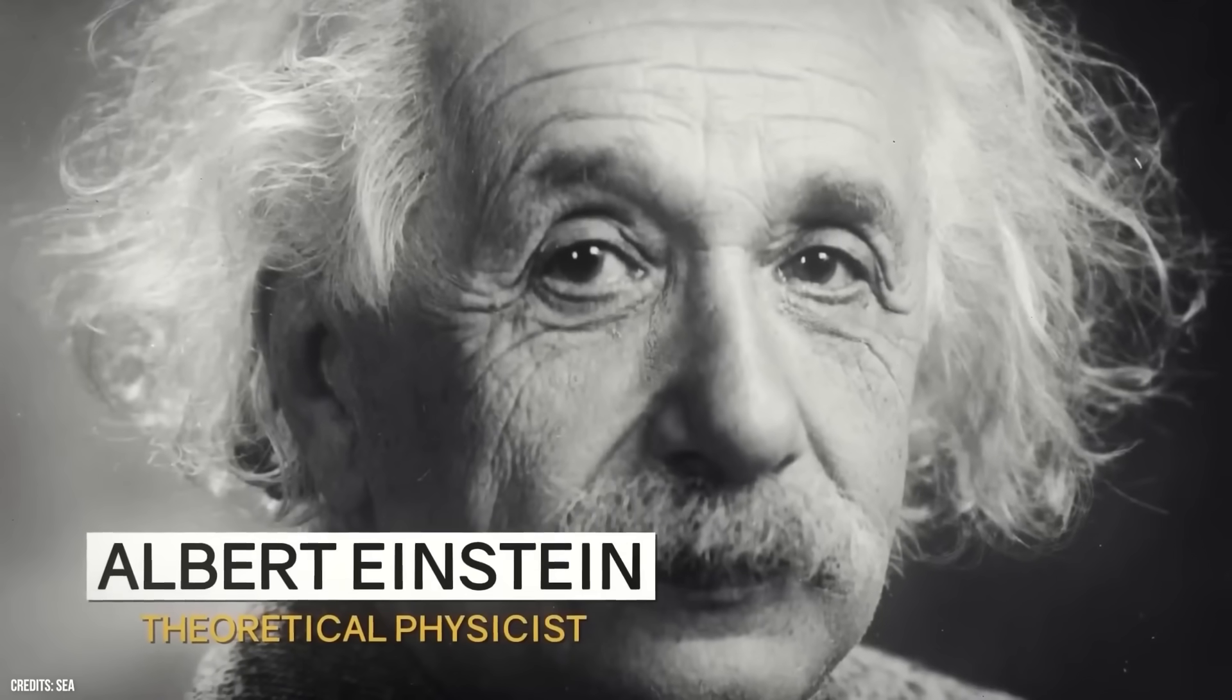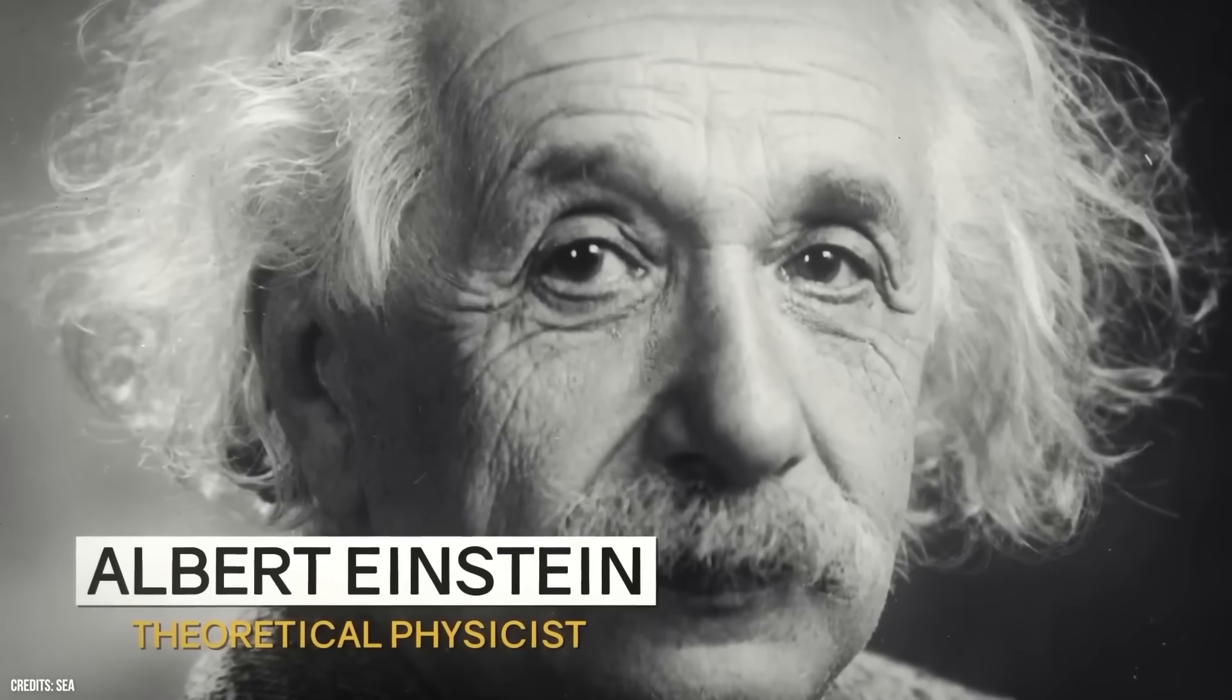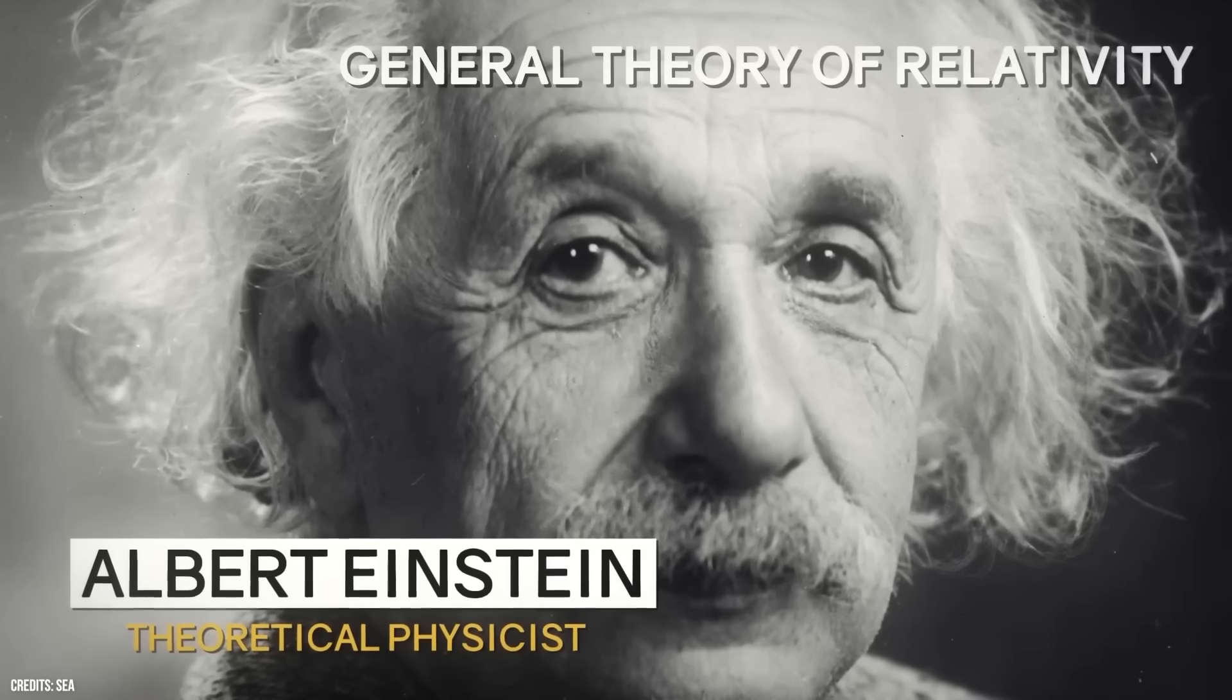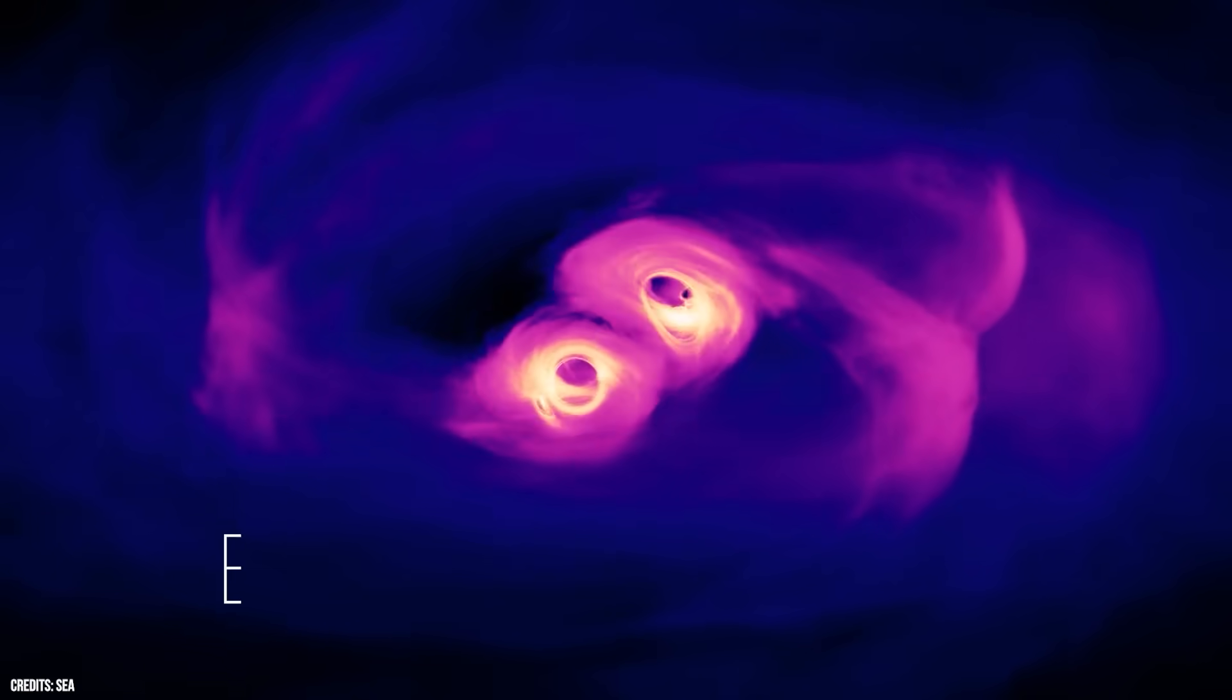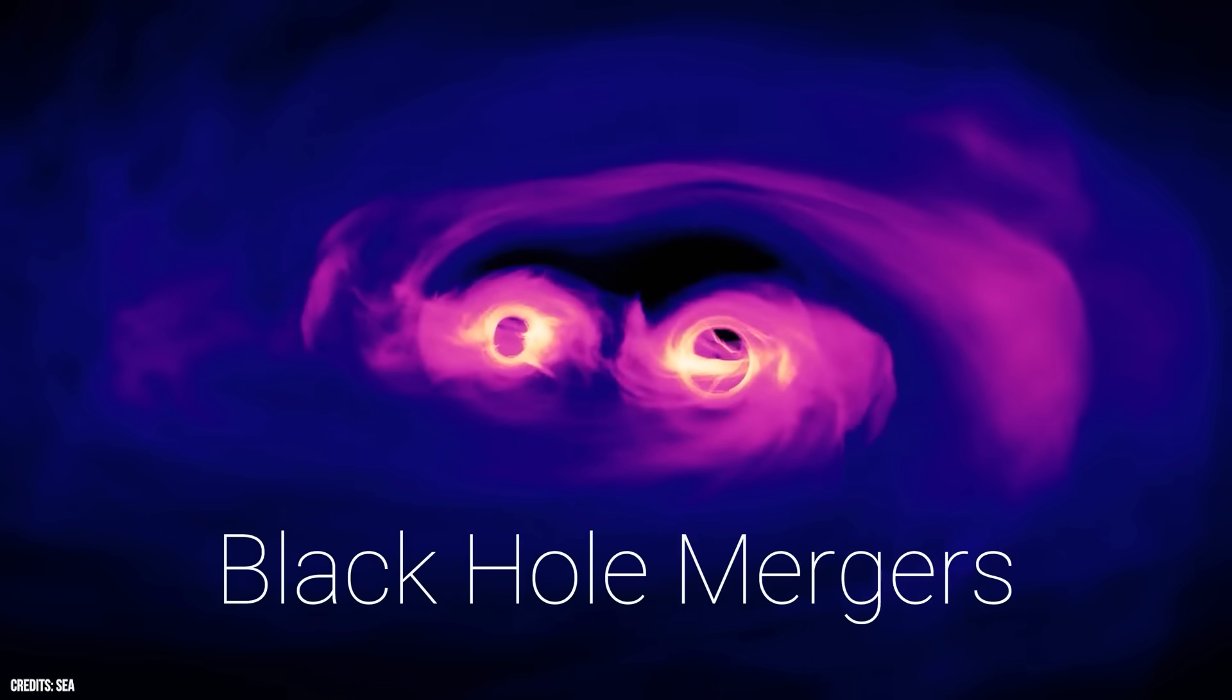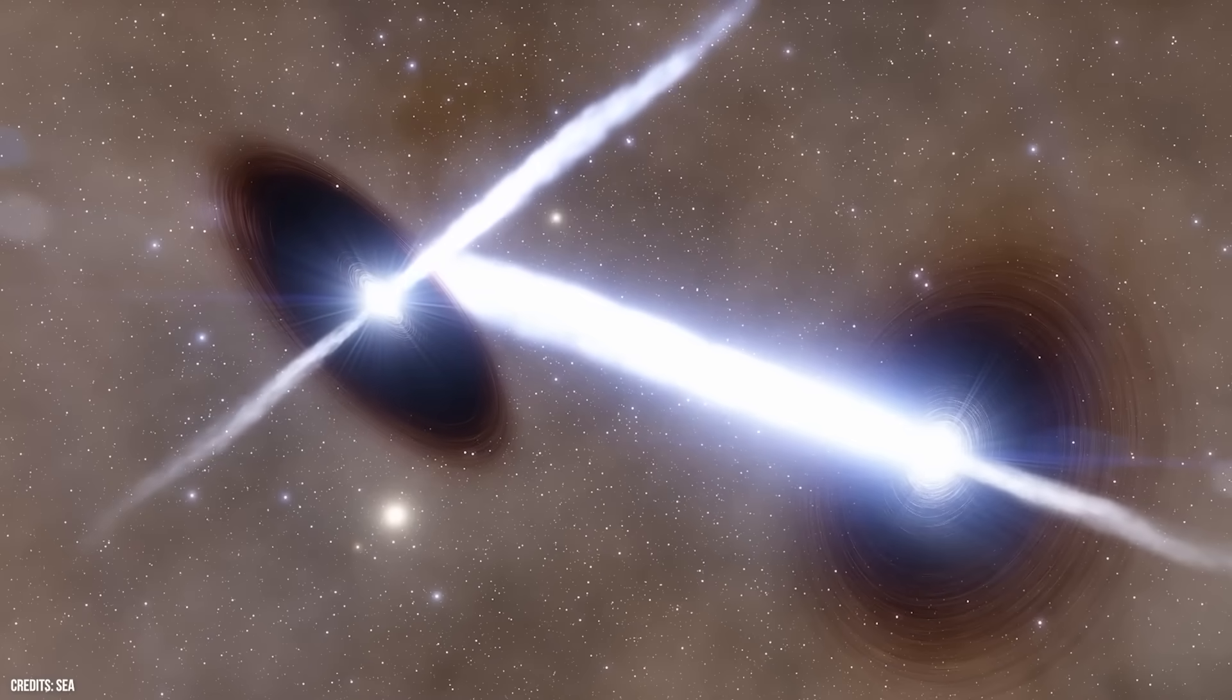According to Einstein's theory of general relativity, matter warps both time and space, resulting in the phenomenon of gravity. Black holes are incredibly dense concentrations of matter, which explains their extraordinary gravitational pull. However, they go beyond that by pushing the boundaries of Einstein's theory.